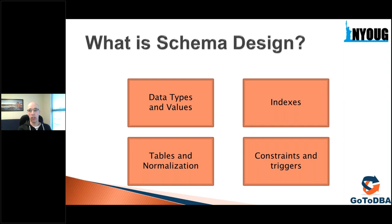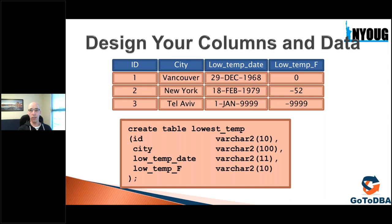The key takeaway is that we need to match the design to the application requirements, because different requirements lead to different designs. Schema design includes: data types and values, indices, table structure and normalization, and constraints and triggers. These are the building blocks we'll dive into in the first part.